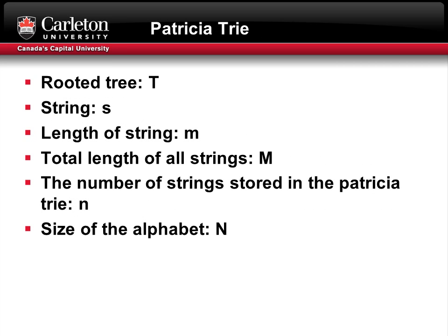The next data structure I'm going to discuss is the Patricia tree. The main distinction between the Patricia tree and the trie is that all internal nodes of the Patricia tree have at least two children, whereas all internal nodes of the trie have at least one child. Instead of an edge having a single letter, we maximize storage efficiency by grouping characters that have one child. Before I begin, I'll define a few variables: T is the rooted tree, S is the string, lowercase m is the length of the string, uppercase M is the total length of all strings, lowercase n is the number of strings stored in the Patricia tree, and uppercase N is the size of the alphabet.